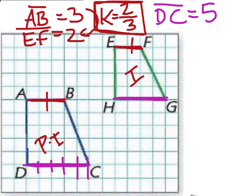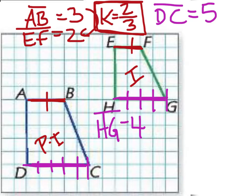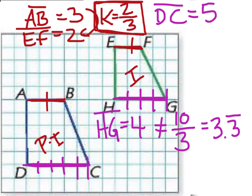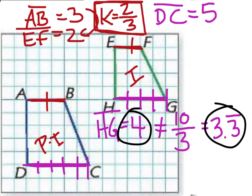Comparing HG to DC: DC is 5 units long. Multiplying 5 by the scale factor of two-thirds gives 10/3, or approximately 3.3 repeating. However, when we count HG, it's actually 4 units. Since 4 does not equal 10/3, the side lengths are not proportional, and therefore these two trapezoid shapes are not similar.